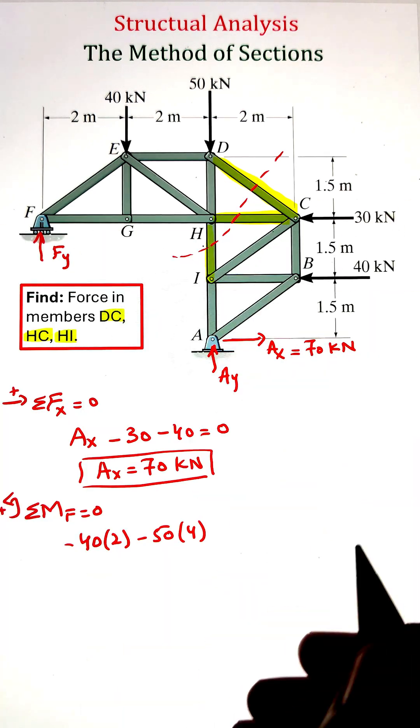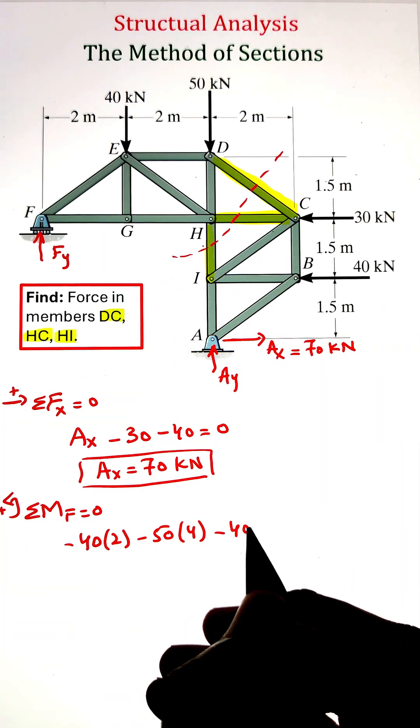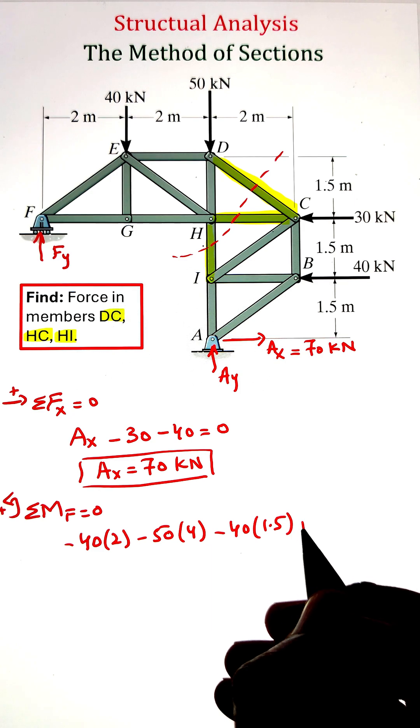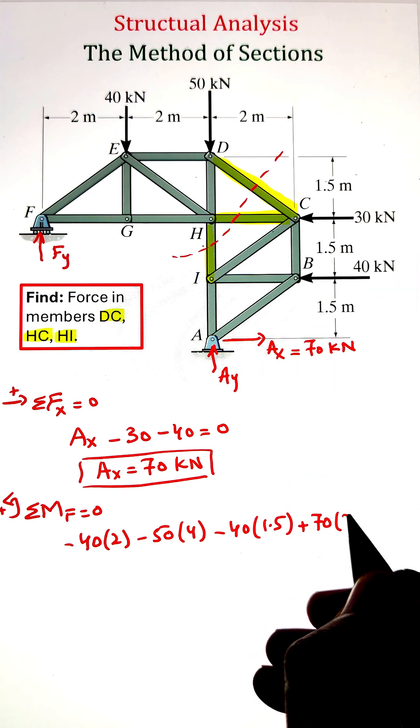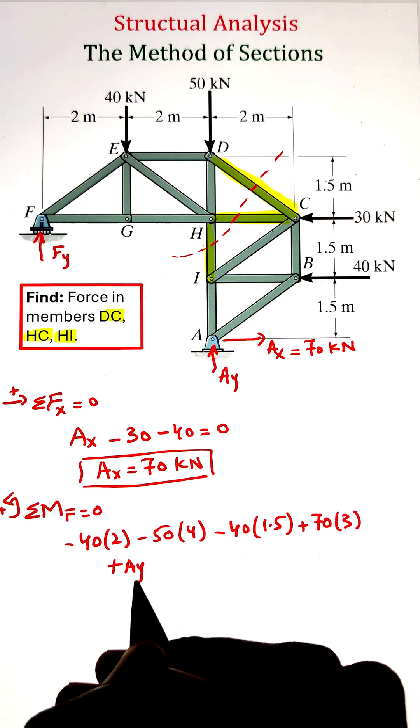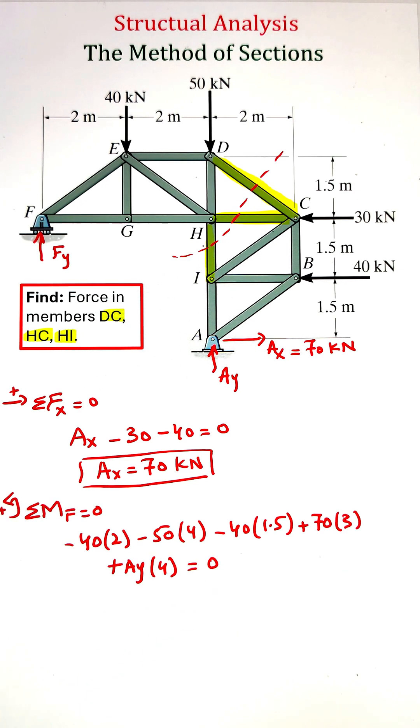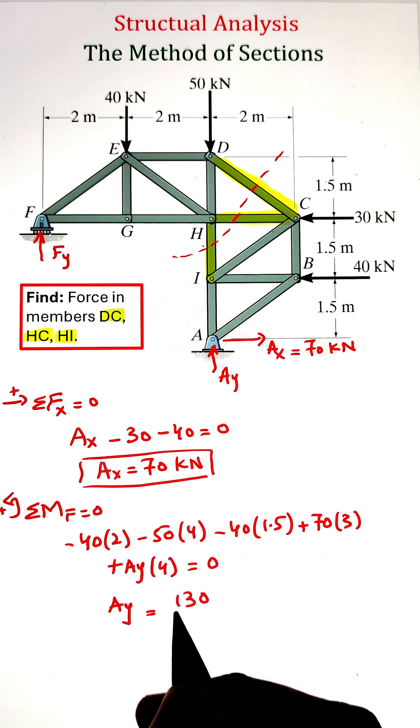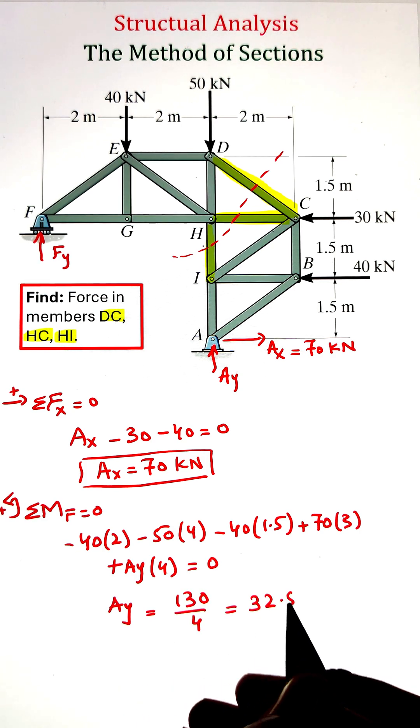To do that, we can apply the equilibrium equation: summation of forces along the x-axis equals zero. This gives us the value of Ax equals 70 kilonewtons. Next, we can apply the summation of moments along point F and equate it equals to zero. The reason why we are doing it at point F is so that our force Fy won't create any moment and we'll be able to figure out the force Ay.